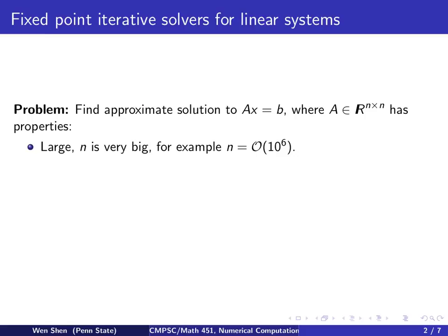We now look at fixed-point iteration methods to find approximate solutions to linear systems. We'll be considering the following problem: we want to find approximate solution to the system Ax equal to b, and in particular the A matrix has the following properties.